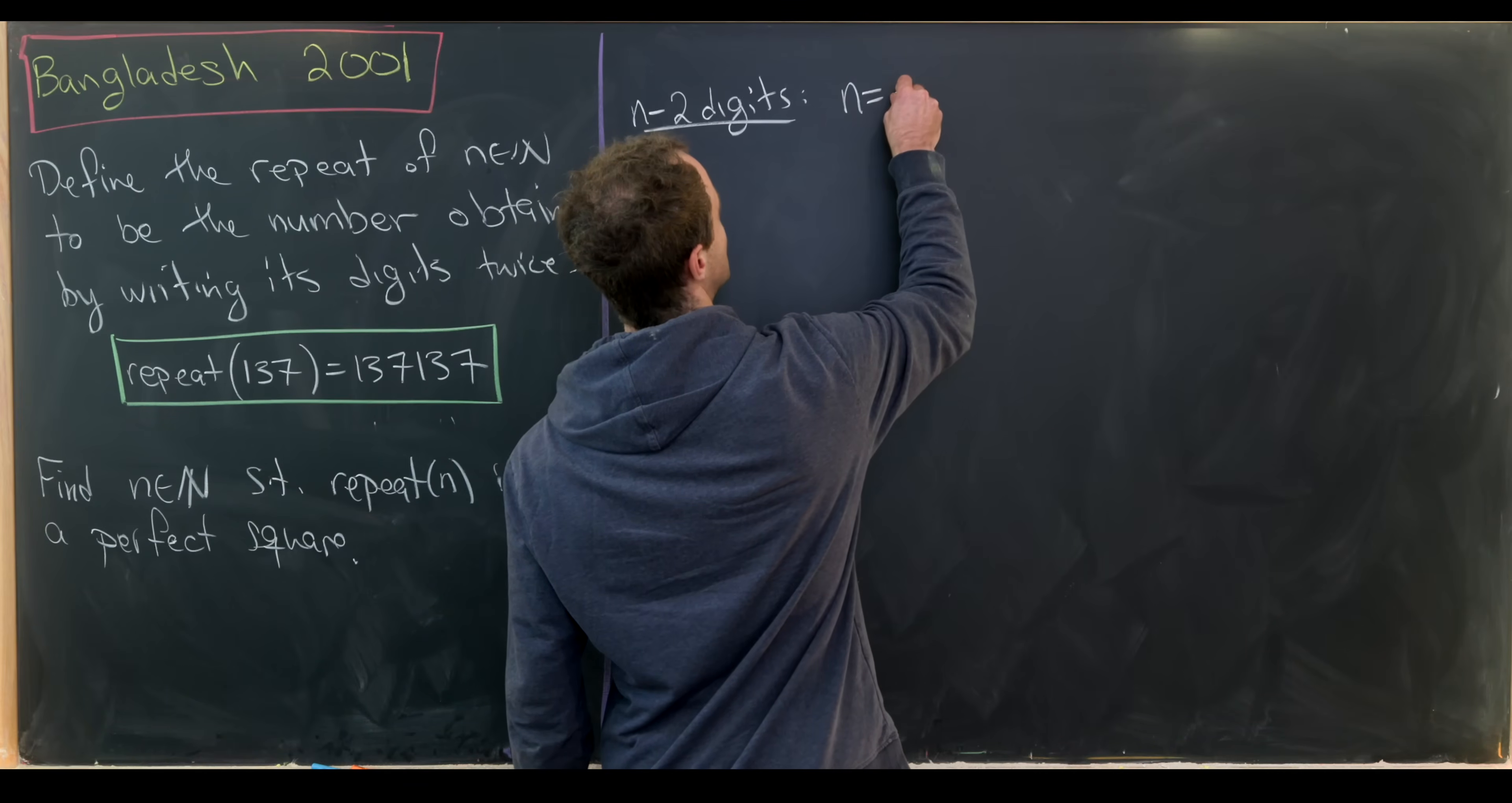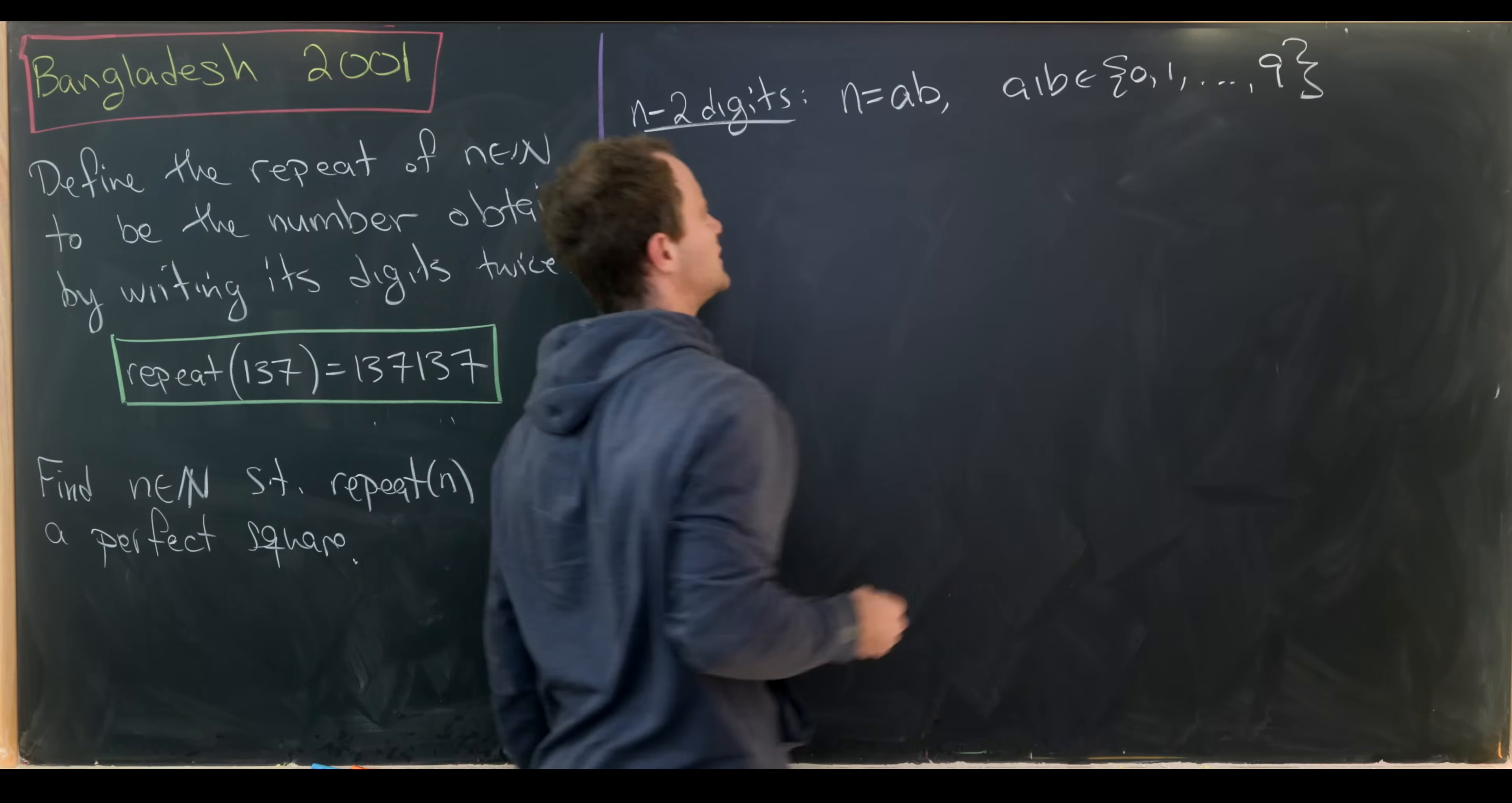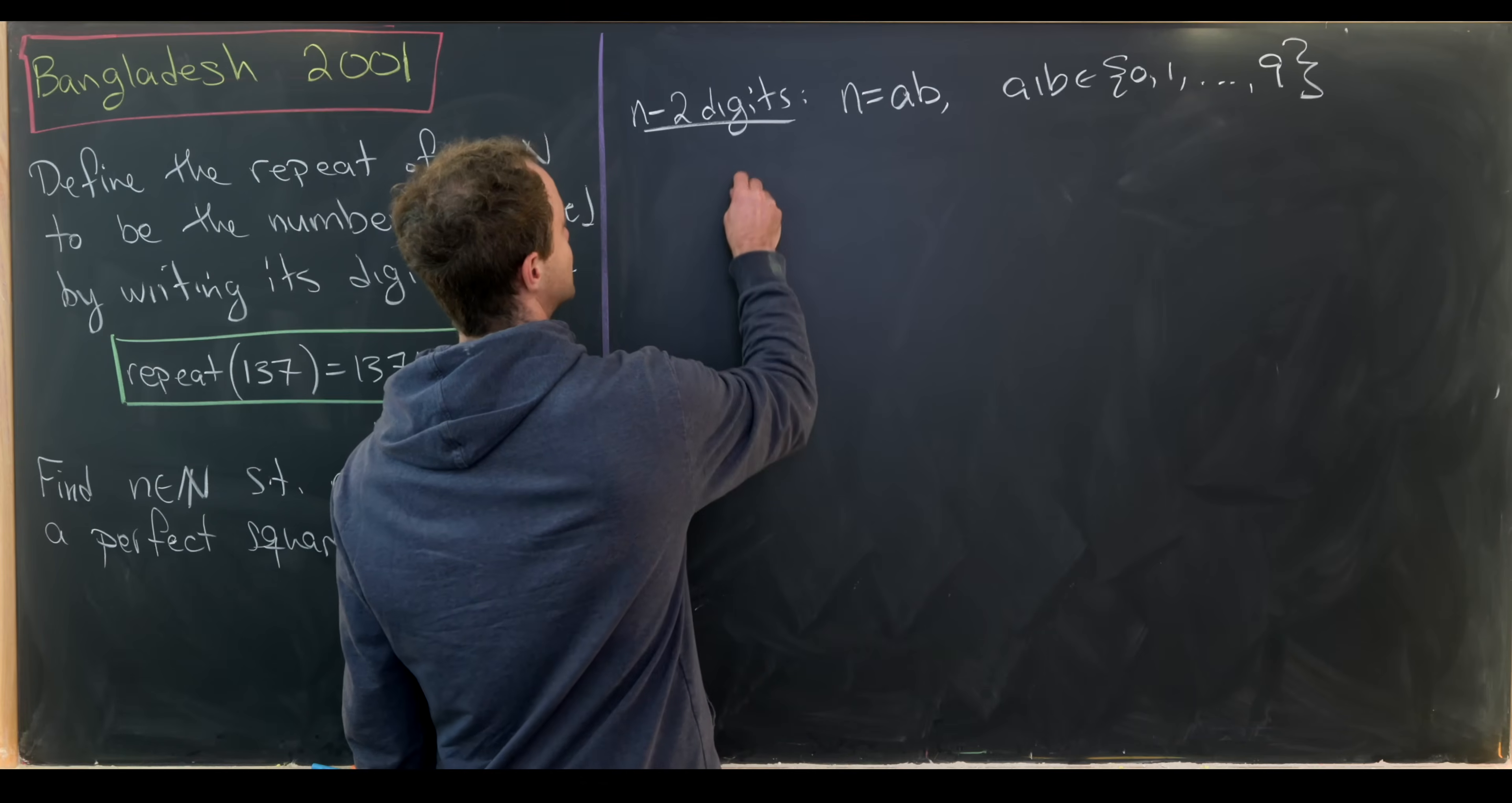Let's maybe first look at the case when n has two digits. You might say, what about the case when n has one digit, and I don't think that case is super interesting. So that means we have the case when n is equal to ab, where a and b come from the set 0, 1 all the way up to 9. Perhaps you might want to say that a is not equal to 0, but I won't write that in there.